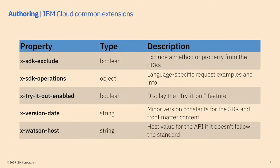We've done a lot of work to add common extensions to ensure our internal customers have a great authoring experience and a consistent way of doing things. The SDK exclude extension lets us indicate whether we want a method or property hidden that was built as part of the SDK but maybe we don't publish as part of the API. Operations allow specific request example information in the middle or right pane. If we don't want try-it for a specific endpoint, they can turn it off — or turn it off for the whole thing.